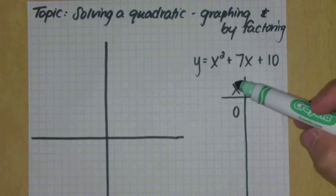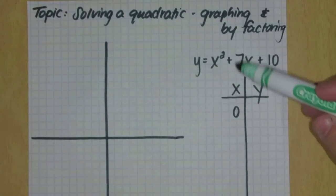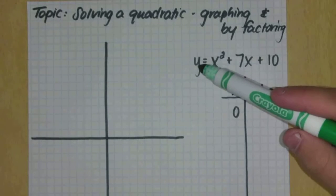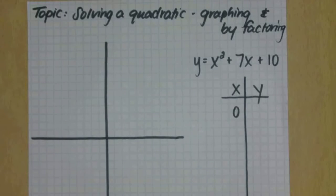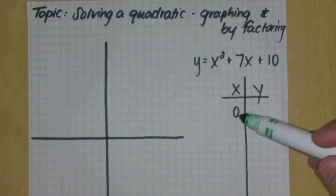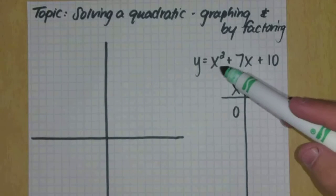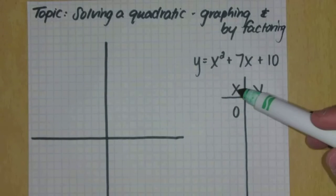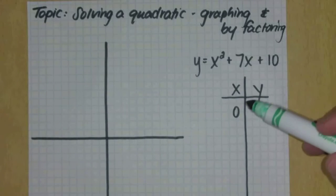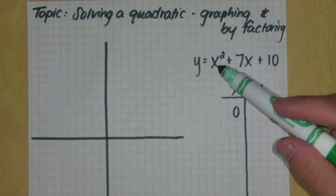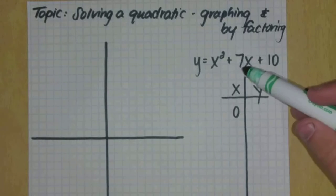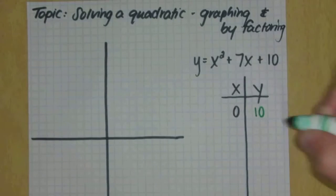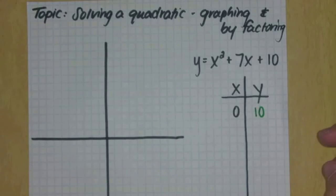We have our X, which is our input or domain, and we'll be looking for Y, our output. I like to always start with zero — it always gives you a good idea of what's going on with your picture, and zero is usually the easiest point to plug in. When I plug zero in: zero squared is zero, seven times zero is zero, zero plus zero is zero. So when X is zero, the Y value is ten.